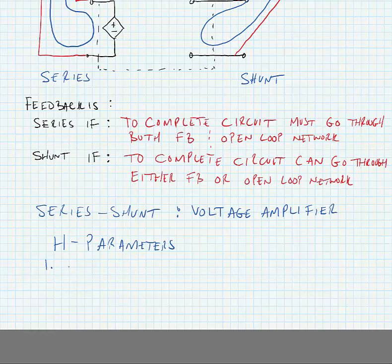We're first going to use H11 and H22 to load the open loop circuit. These are approximations for what the feedback network does to the open loop circuit.